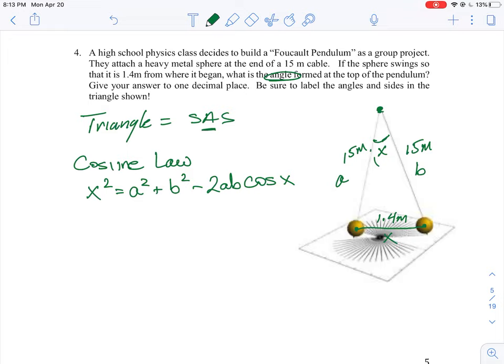So let's just start putting in some numbers and then we'll do the rearrangement. So we know X is 1.4, x squared is going to be 1.4 squared. A, we can just pick any one of those numbers, going to be the same, so we know it's 15 plus 15 squared minus 2 times 15 times 15 times cosine X.